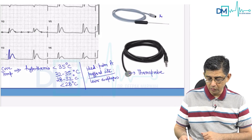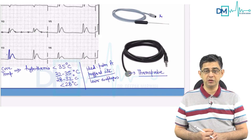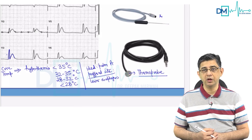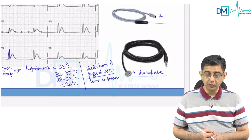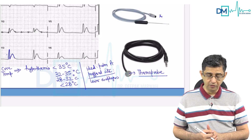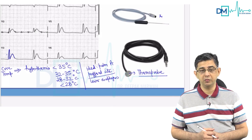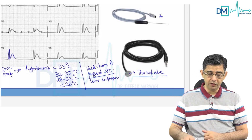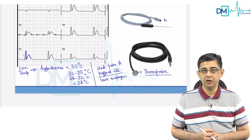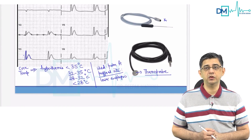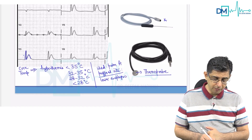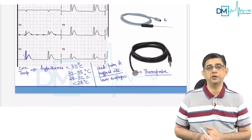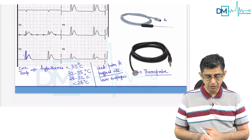If you have been to the NICU, you would have seen a thermoprobe placed on little babies to check body temperature — the thermoprobe is for neonatal monitoring, while the esophageal probe is for adults. For treatment of hypothermia, you would go for active rewarming, specifically peritoneal dialysis with warm saline. Remember: treatment of choice for hypothermia is peritoneal dialysis with warm saline, and Osborne wave is found in two conditions — hypothermia and hypercalcemia.